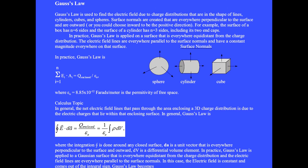Gauss's law is the sum of vector E dot vector A for each of the surfaces, equal to the enclosed charge divided by epsilon zero, where epsilon zero equals 8.85 times 10 to the minus 12 farads per meter, the permittivity of free space.